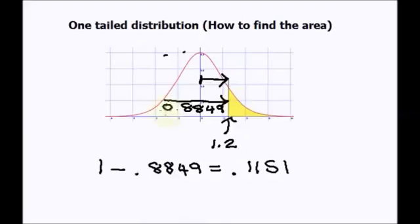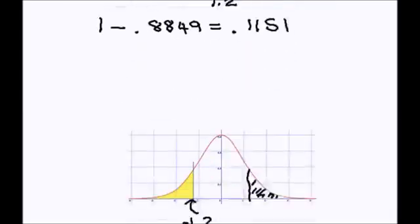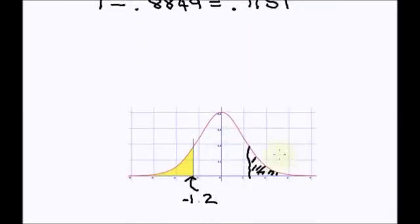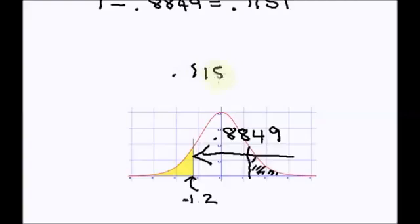So this area to this point is 0.8849. Which means this area is also 0.8849. So my yellow area is exactly the same. It is 0.1151.